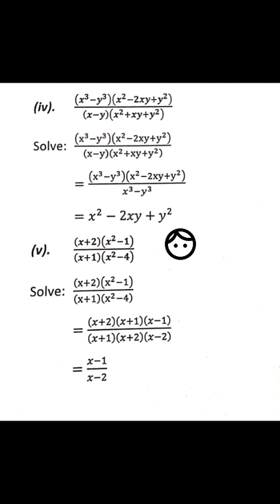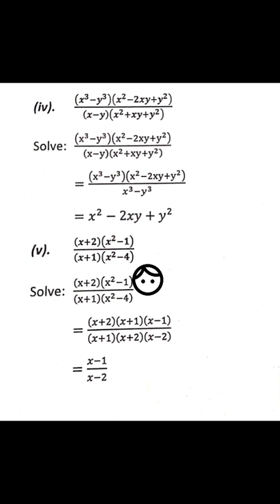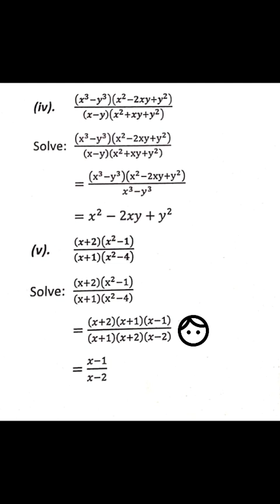Part 5: (x+2)(x²-1) divided by (x+1)(x²-4). The factorization of x²-1 is (x+1)(x-1), and x²-4 factorizes as (x+2)(x-2). Then (x+1) will be cut and (x+2) will be cut. The answer is (x-1) divided by (x-2).